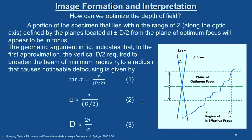An important feature of SEM is depth of field, which we discussed in earlier theory. How can we optimize depth of field? Looking at the schematic: the specimen surface has the beam falling on it; the plane of optimum focus is where the beam converges, defined by alpha. Assume a fracture surface with uneven ups and downs. A portion of the specimen that lies within the range Z along the optic axis, defined by planes at ±D/2 from the plane of optimum focus, will appear in focus.